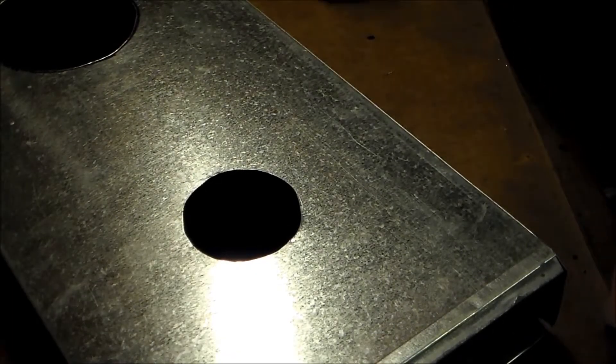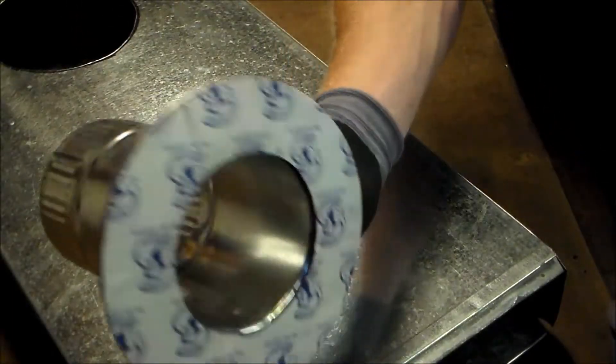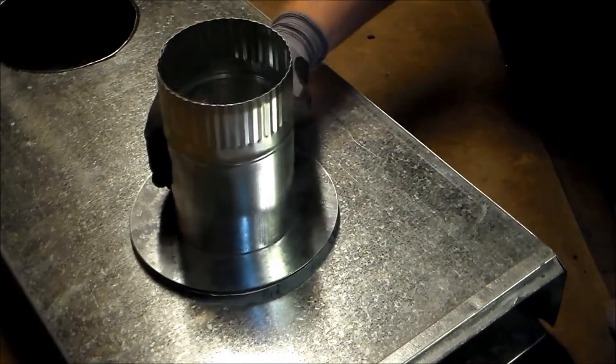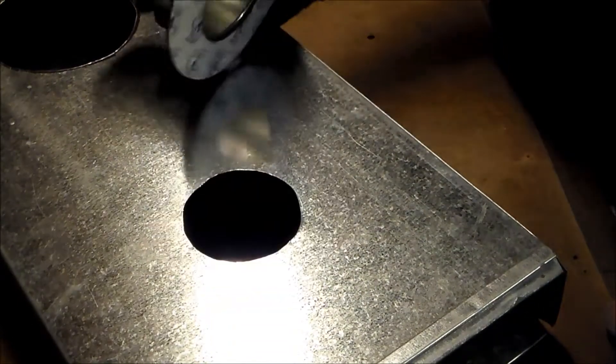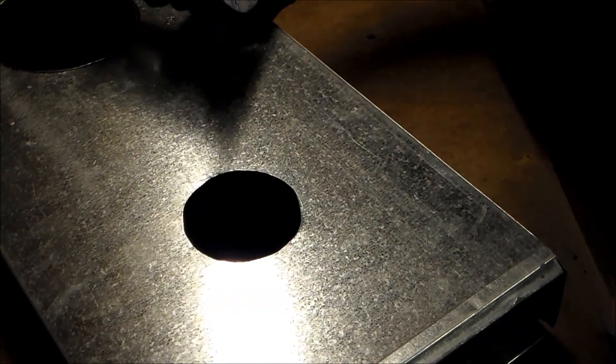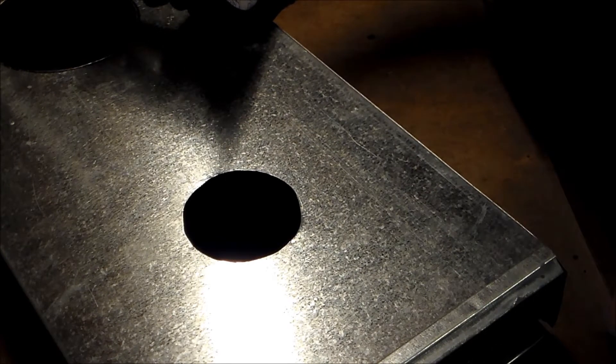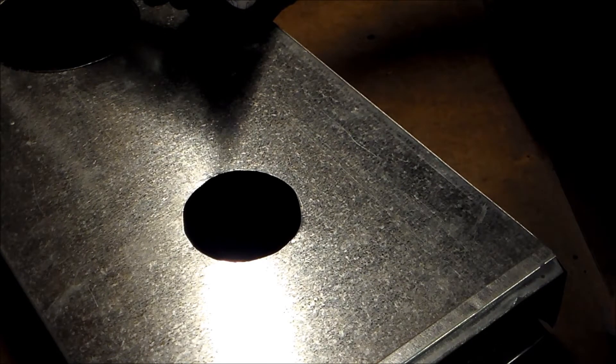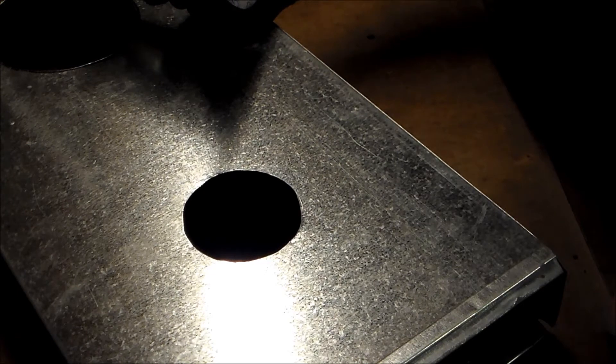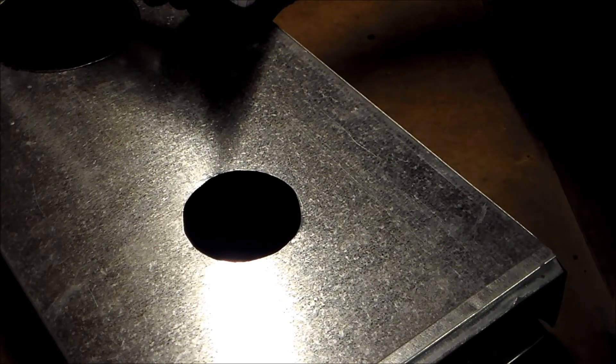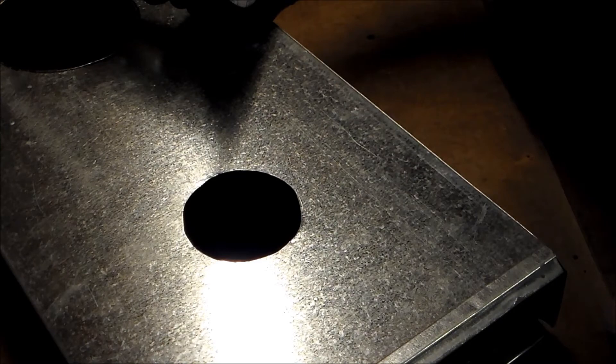All right, so what we're going to do is install this sticky tap onto this duct in which we cut a round hole. If you don't know how to cut a round hole into a rectangular piece of duct, I would suggest you go back to my video on how to cut a round hole into a rectangular piece of duct. I'll post a link to that as well.